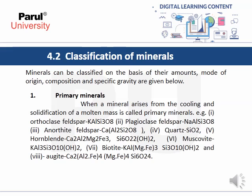Primary minerals: when a mineral arises from the cooling and solidification of a molten mass, it is called a primary mineral. For example, orthoclase feldspar, plagioclase feldspar, anorthite feldspar, quartz, hornblende, muscovite, biotite, and augite.